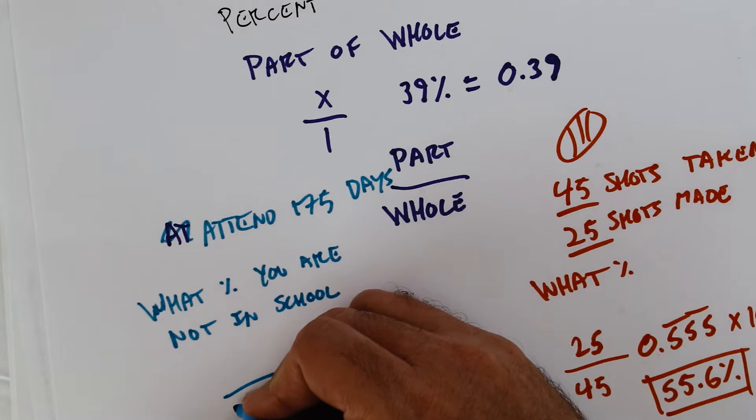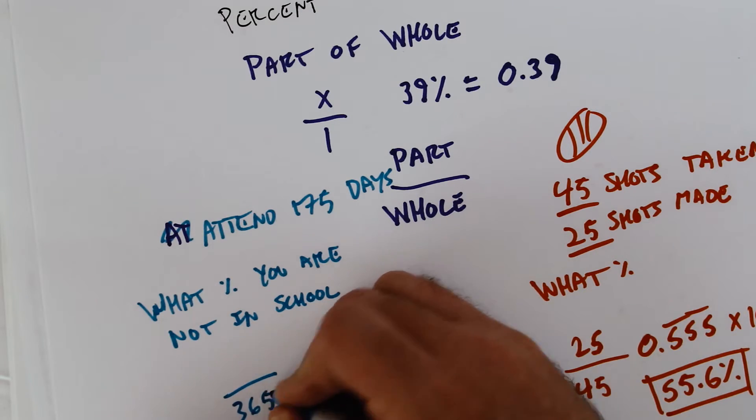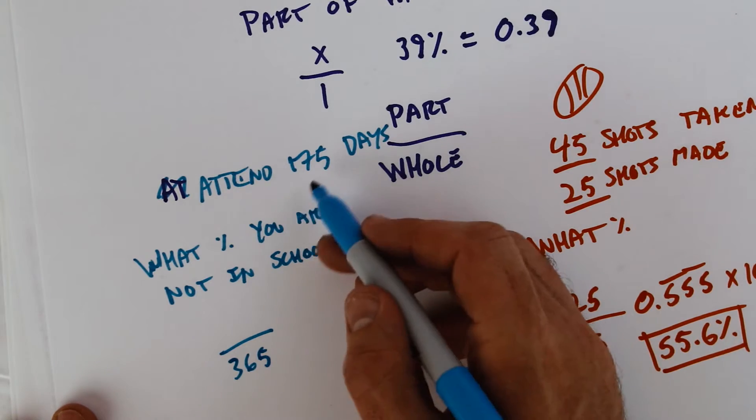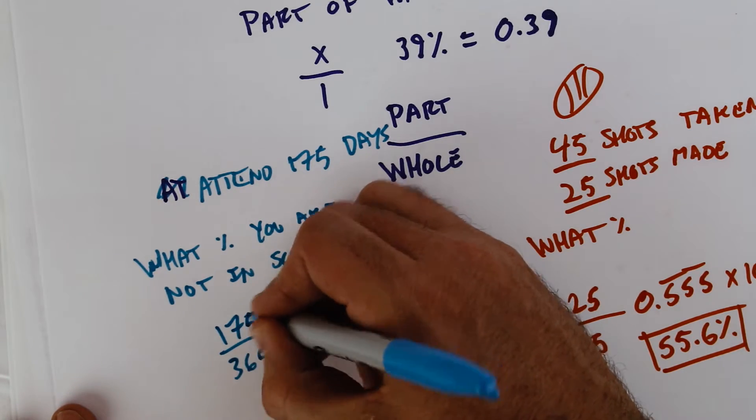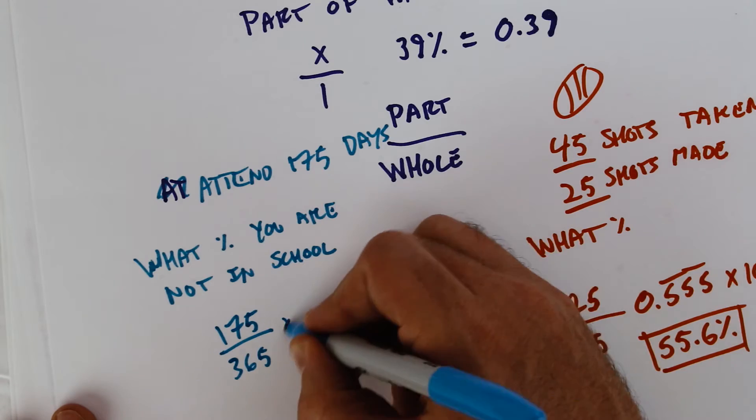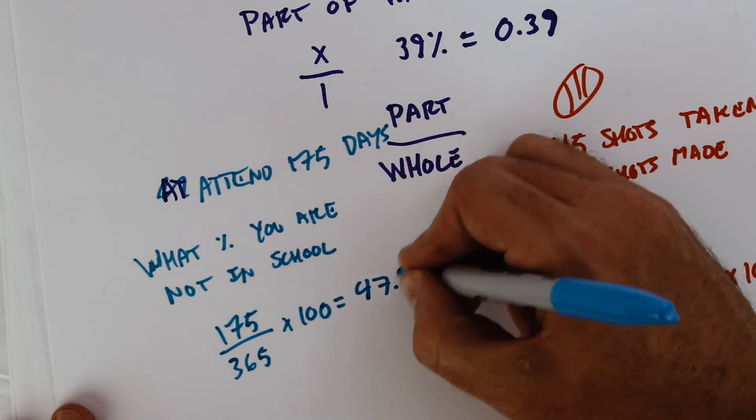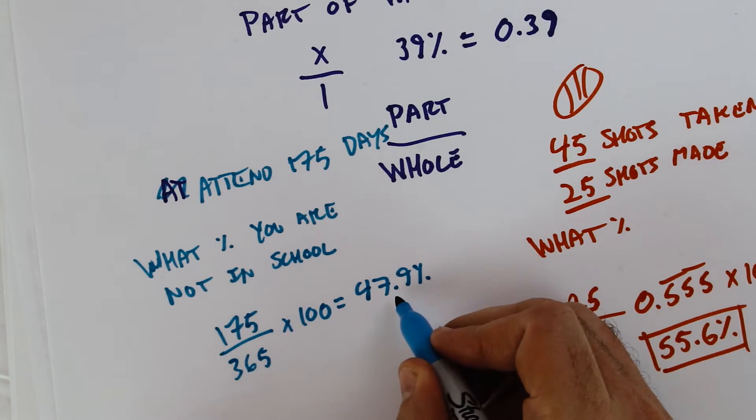We know that the whole is 365, because that's a total days in a year. So we could figure out the percent attended. You say, well, I attended for 175 days out of 365. Set this up times 100 will give us our percent 47.9%. But then we want to know what percent you're not in school.